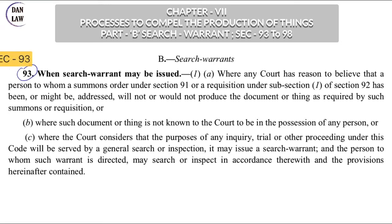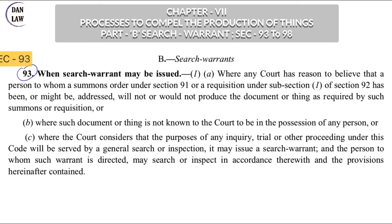Section 93 authorizes the court to issue a search warrant. The conditions under which a search warrant can be issued are stated here. Condition 1: under sections 91 and 92 clause 1, the court called a person to present before the court with a document or any thing required in investigation, trial, or inquiry.